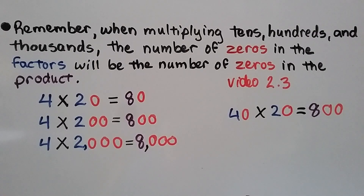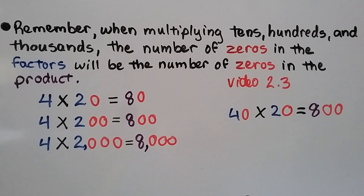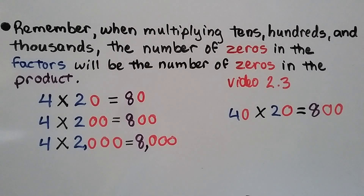Remember, when multiplying tens, hundreds, thousands, or even larger place values, the number of zeros in the factors will be the number of zeros in the product. We learned about this in the last video, lesson 2.3, which is linked in the description.